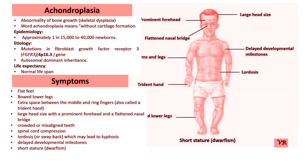Achondroplasia is caused by a mutation in the FGFR3 gene. The FGFR3 gene, named Fibroblast Growth Factor Receptor 3, encodes a membrane-bound receptor that is part of the Fibroblast Growth Factor Receptor family. FGFR3 plays a critical role in regulating cell growth,